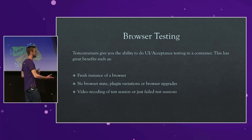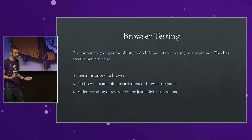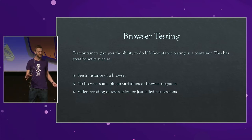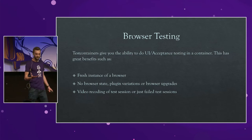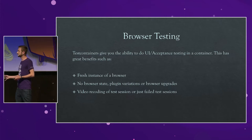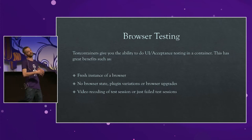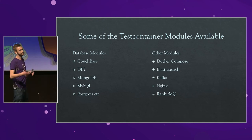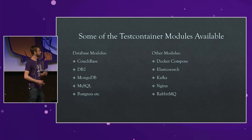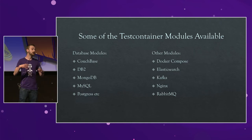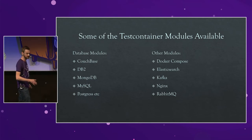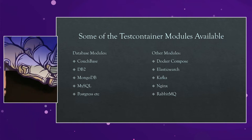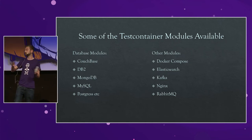Test Containers also supports UI Acceptance Tests, so we can do graphical user interface testing. For browser testing, containers can give you a fresh instance of the browser every time — no browser state or variations or browser upgrades, and it can even do a video recording of the actual test, or only on failure. There are loads of different Test Container modules: databases like Couch, Couchbase, DB2, MongoDB, and others like Docker Compose, Elasticsearch, Kafka, Nginx, and RabbitMQ. The list is quite large and growing rapidly — there'll be technologies contributed that you'll be using.